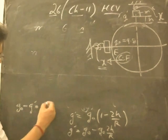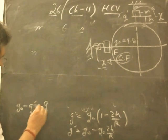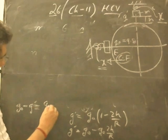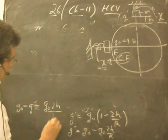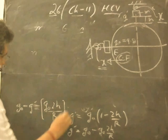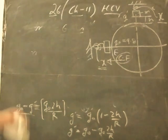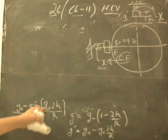So g₀ - g' becomes g₀(2h/R). Therefore, g₀ - g' is equal to g₀(2h/R). We will use this relationship.